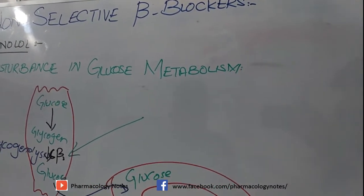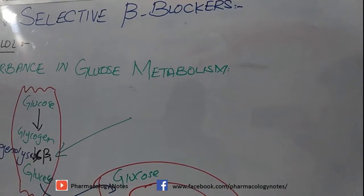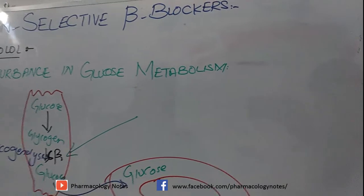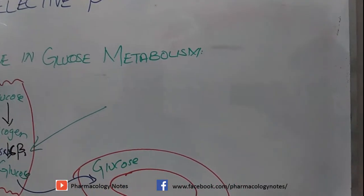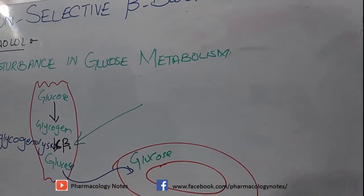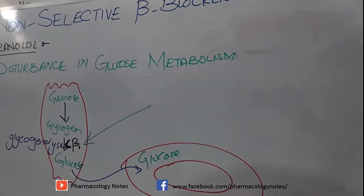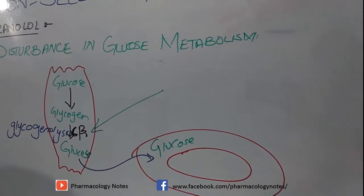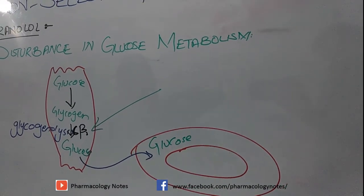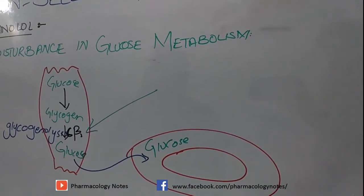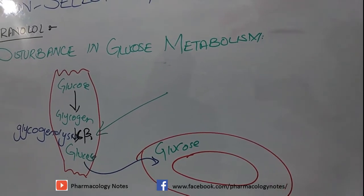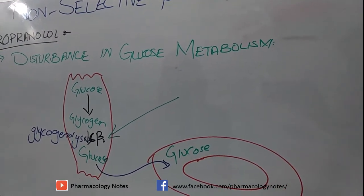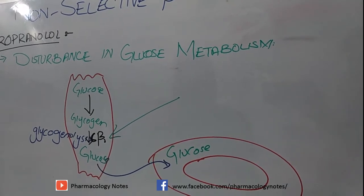Since glucose decreases in the blood, we must take care to monitor glucose levels in patients with hypoglycemia or diabetes. To summarize propranolol's effects: cardiac output decreases, SA node activity decreases, there is disturbance in glucose metabolism, decreased peripheral blood flow, vasoconstriction, and bronchoconstriction.